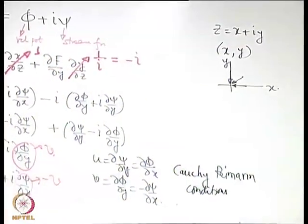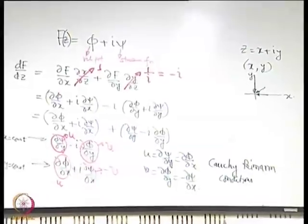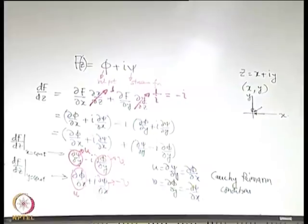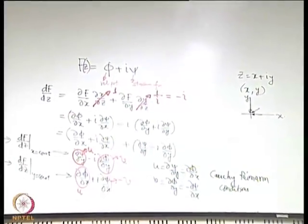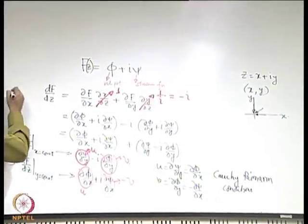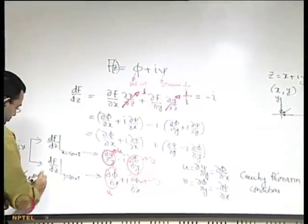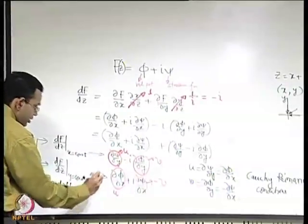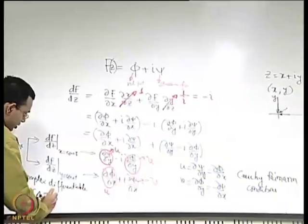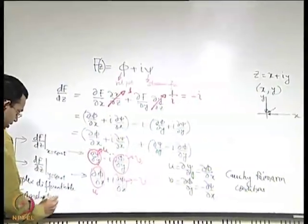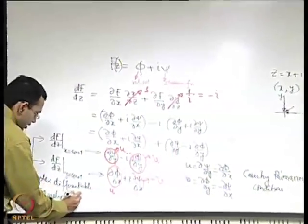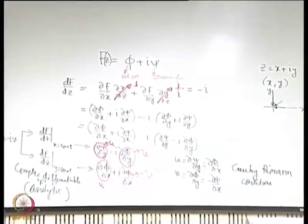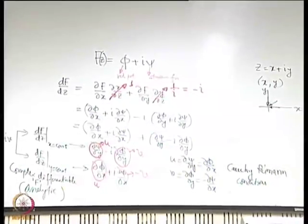When the Cauchy-Riemann conditions are satisfied, dF/dz exists — meaning F is complex differentiable. Such a function which is complex differentiable is also known as an analytic function in complex variable theory. So F is analytic. It is important to know these terminologies.